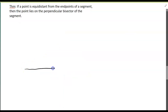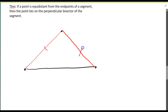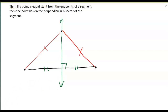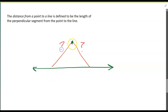This is simply the converse of what we just talked about: if I've got a segment and a point that is equidistant from the endpoints, then that point must lie on the perpendicular bisector of that segment. Now, if I've got a line and a point not on that line, what is the distance from that point to the line? When we talk about the distance from a point to a line, we always refer to the perpendicular distance — the distance that creates a right angle.